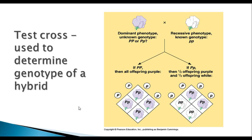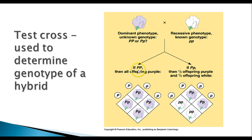A test cross is used to determine the genotype of a hybrid. If you have a plant with a dominant phenotype but you don't know its genotype, you cross it with a recessive phenotype. If it's homozygous dominant, all offspring will show the dominant phenotype. If it's heterozygous, half will show dominant and half will show recessive. A test cross is very useful for determining the genotype of a hybrid in nature.